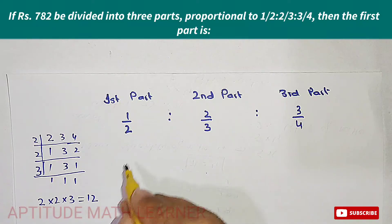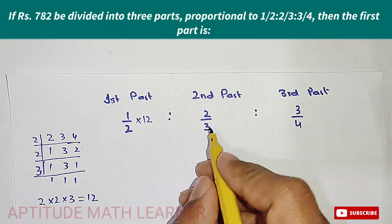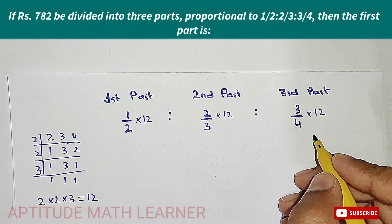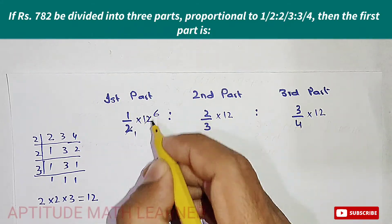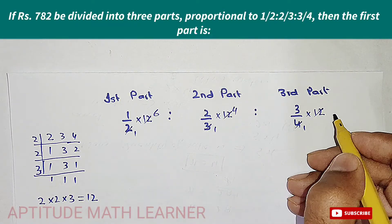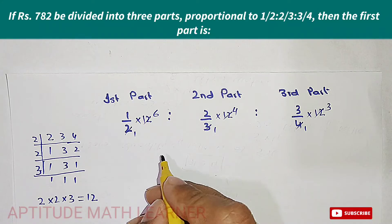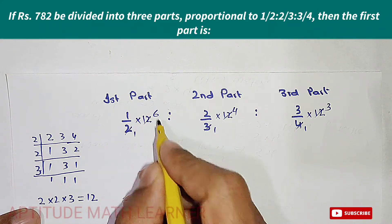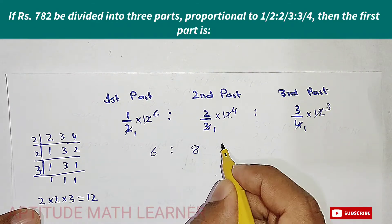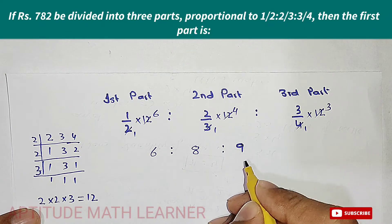We multiply the whole ratio by 12. So: 12/2 = 6, 12/3 × 2 = 8, and 12/4 × 3 = 9. We get the ratios 6 : 8 : 9. I hope you have completely understood up to here.